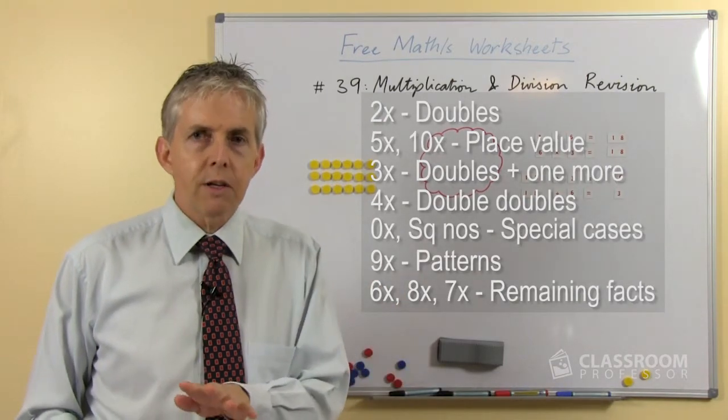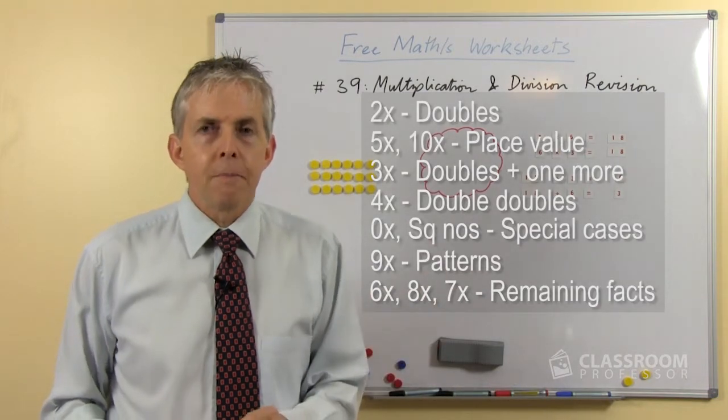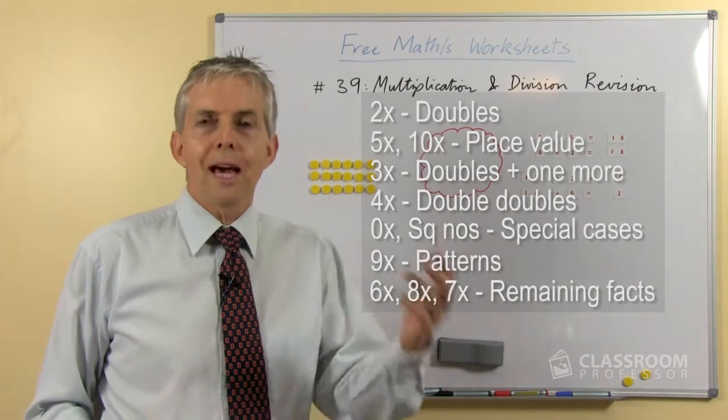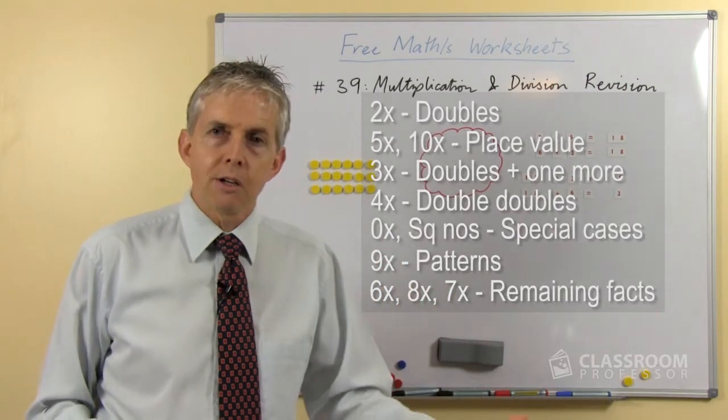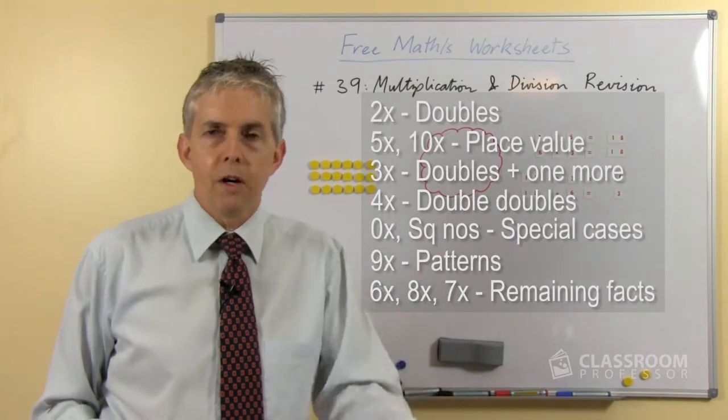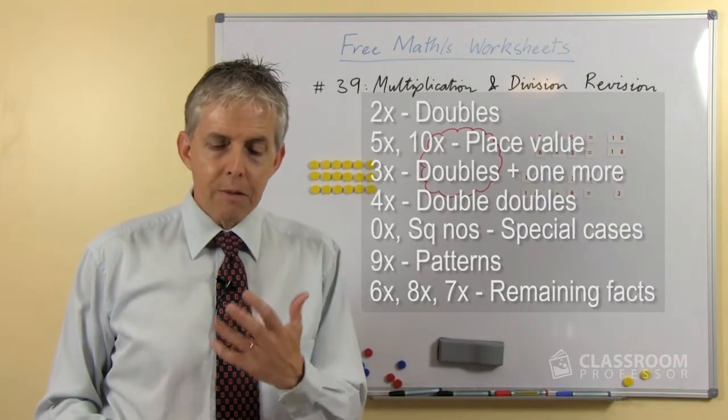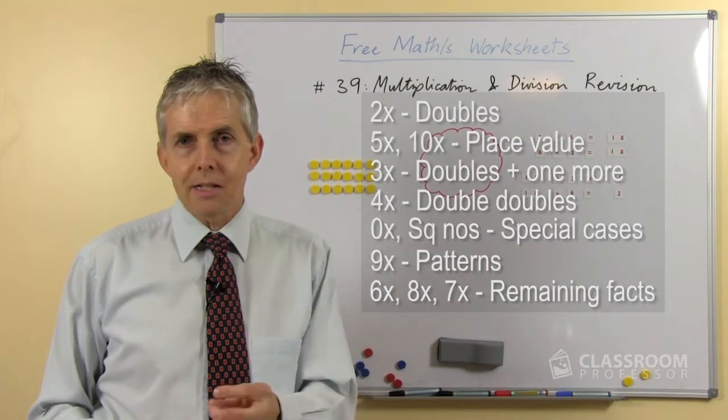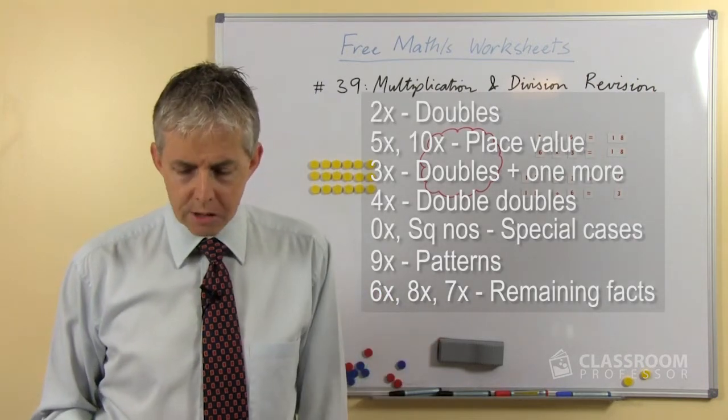And of course in the cases of the 6's, 8's and 7's, if you leave those to the end, then you'll have already done the multiples of those numbers by all the other numbers. So for example you'll have done 6 times 9 when you did the 9 times, 6 times 5 with the 5's and so on. So all that's really left at the end there, because we've already done the squares as well, is 6 times 8, 6 times 7 and 8 times 7, so there's not a lot left over.